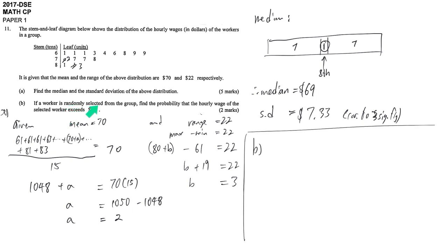And then part b. If a worker is randomly selected from the group, find the probability that the hourly rate of the selected worker exceeds 70. So it is an easy probability question. The probability is equal to our target compared with our total number. That's the probability.